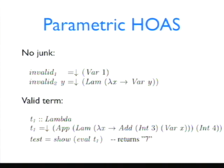With the parametric HOAS representation, you can avoid constructing junk terms and essentially prevent terms that would not be valid closed lambda terms. For example, trying to instantiate the type A to an integer is going to be rejected by the type system because you are trying to instantiate the type parameter. The key idea is that if you want to use variables, all these variables need to be generated from one of the lambda constructors, using one variable of the meta-language.